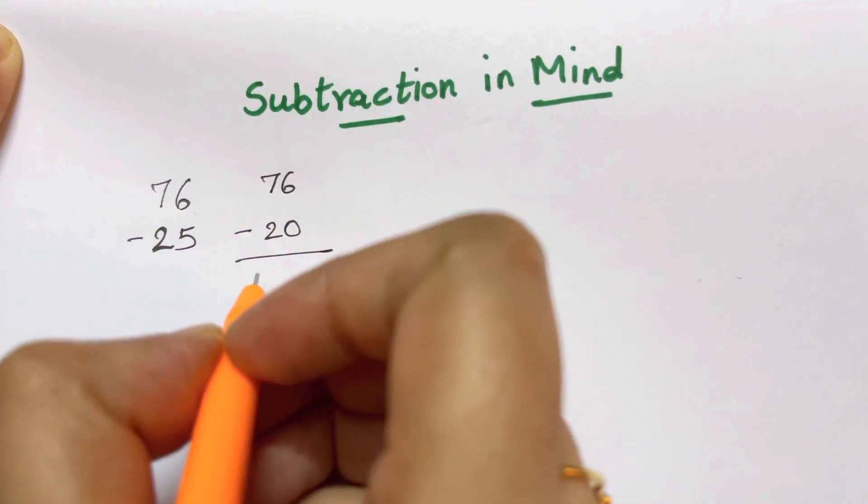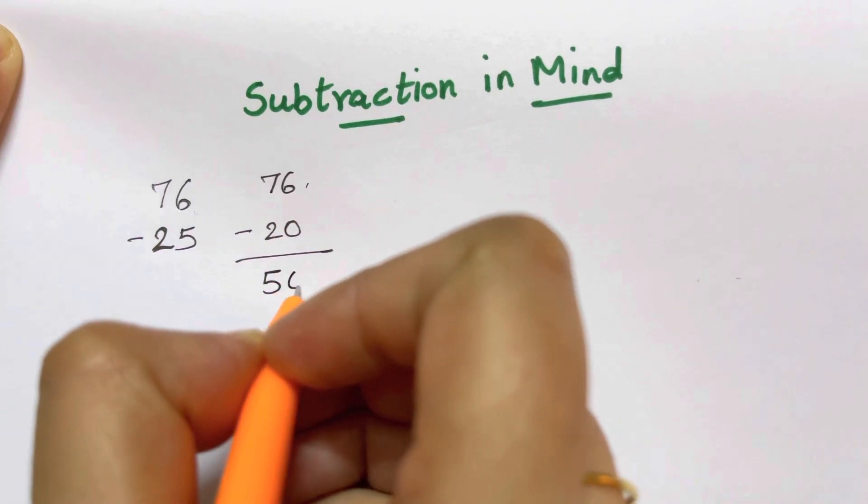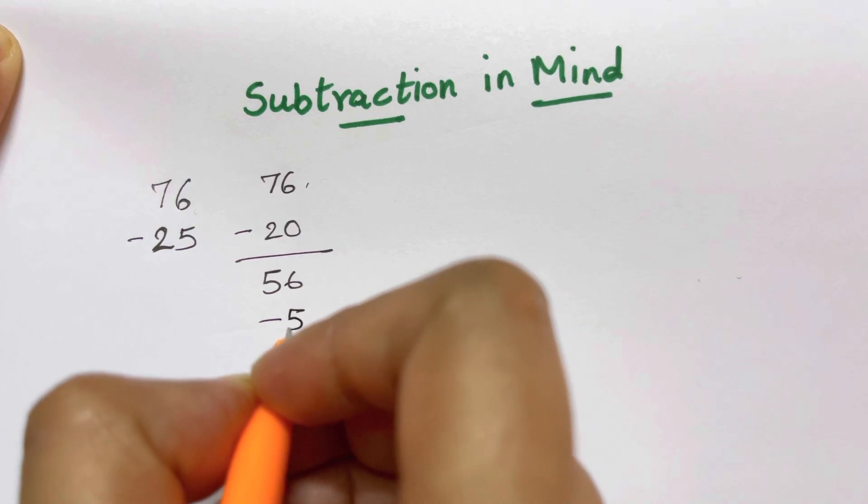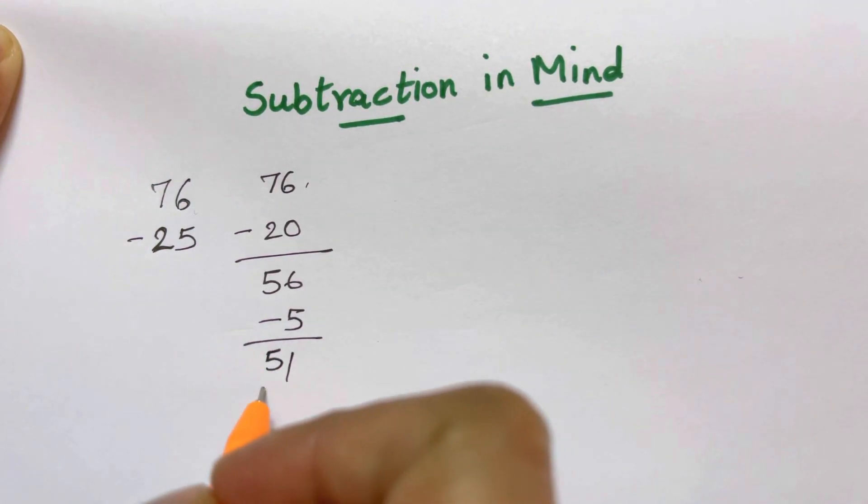That's easy for you. 70 minus 20, that will give you 50 and that 6 is there, 56. Then there's 5 here, so you're going to subtract again a 5, so you get 51. That's your answer.